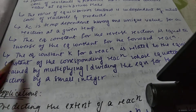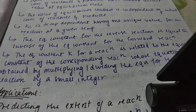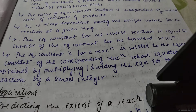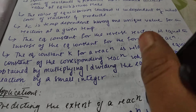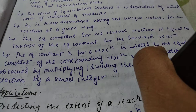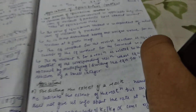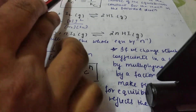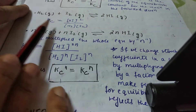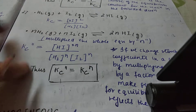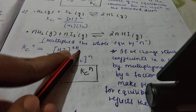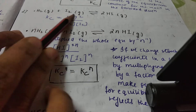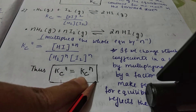The equilibrium constant for a reaction is related to the equilibrium constant of the corresponding reaction whose equation is obtained by multiplying or dividing the original reaction by a small integer. If we multiply the whole reaction by N, then the new equilibrium constant Kc'' equals Kc raised to the power N, because every concentration term gets raised to the power N.